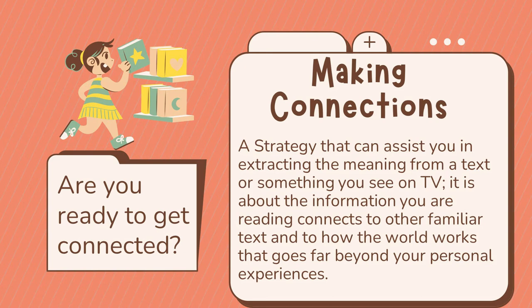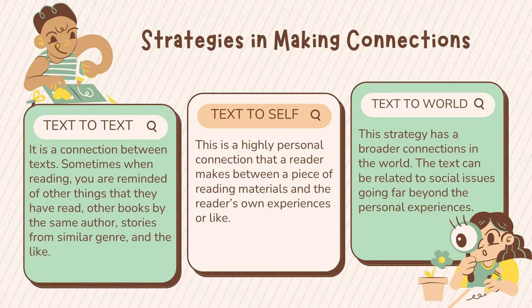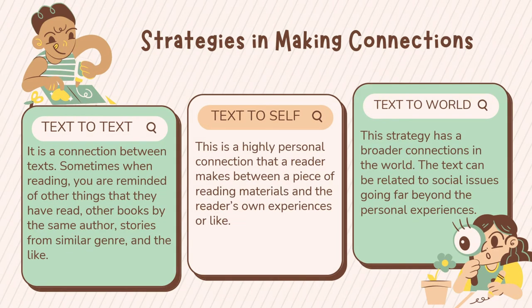There are three strategies in making connections. The first is text-to-text: a connection between texts where, sometimes when reading, you are reminded of other things you have read — other books by the same author, stories from a similar genre, and the like. A learner comprehends a certain text when he or she knows how to connect it to another text. For example, a certain setting in one story can be connected to a setting in another story, making it a text-to-text connection.